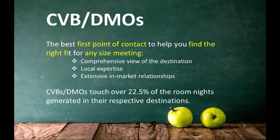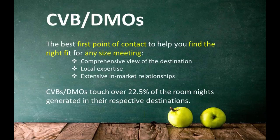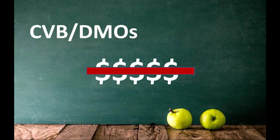A 2014 study revealed that CVBs or DMOs touched over one in four room nights generated in their respective destinations. In 2014, DMOs booked a new high of 41.5 million room nights for future events — they're a major generator of economic value. DMOs and CVBs love to tout that their services are free to planners, but free is an interesting connotation because everyone tends to think nothing's free.